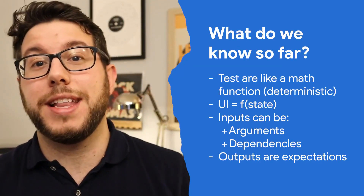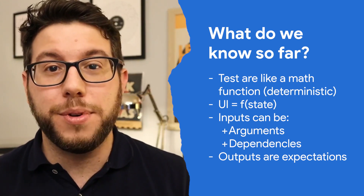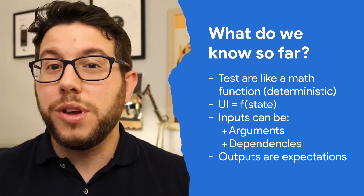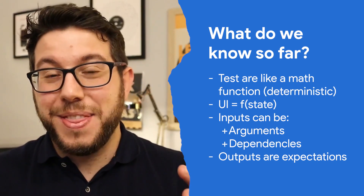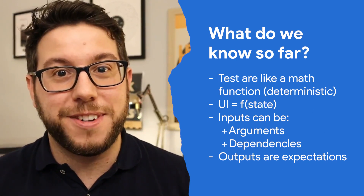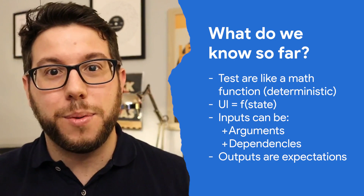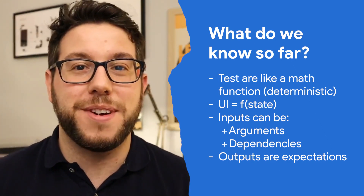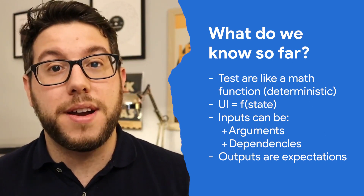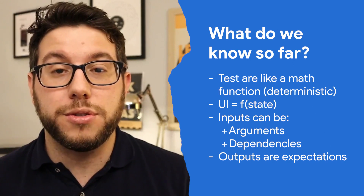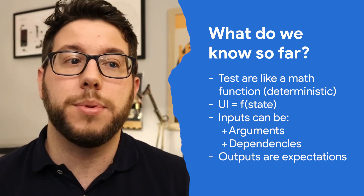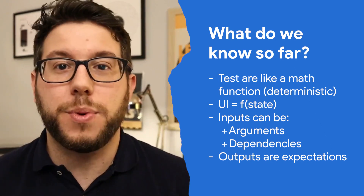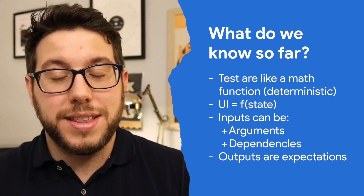So what do we know so far? We know that tests are like a math function and they must be deterministic — for a given input, there should be only a single output. We also know that our UI is a function of our state, meaning the tests we execute against the widget tree will be variable based on the state we have. We know inputs are very important, and we've seen how to use method arguments and class dependencies to control those inputs. And when we talk about outputs and results, that's nothing different than our expectation.